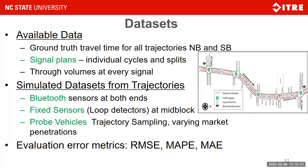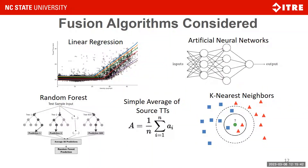We used RMSE, MAPE, and MAE for evaluation of error and performance of the fusion modules. In terms of fusion algorithms considered, we ranged from simple algorithms like linear regression and simple average to more complex neural network-based modules, tree-based modules like random forest, and clustering methods like nearest neighbor. We planned further algorithm exploration, but the limited data set was not responsive to those more data-intensive approaches.